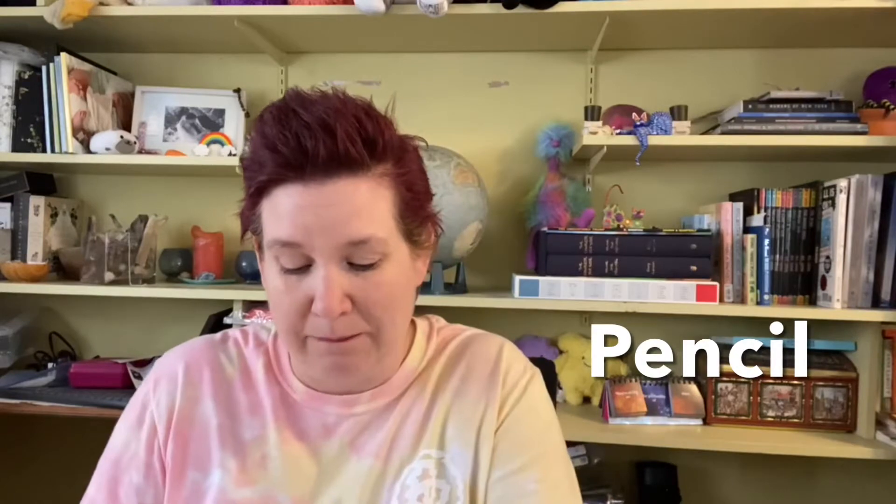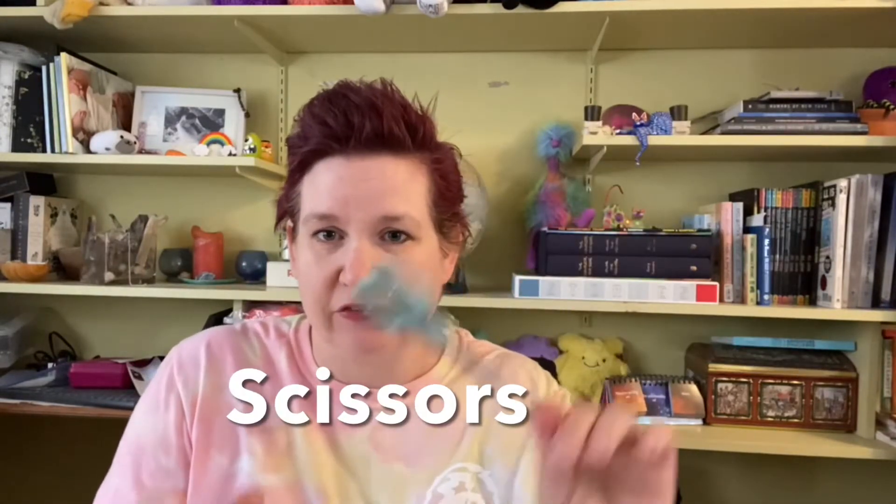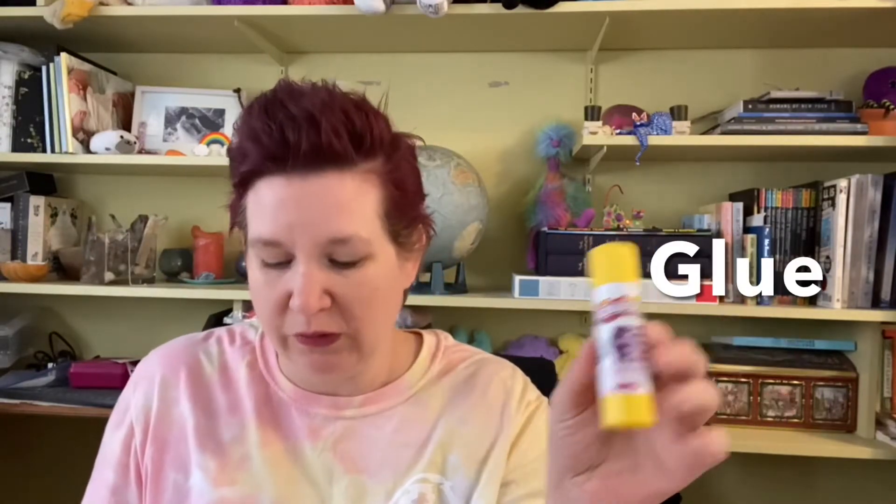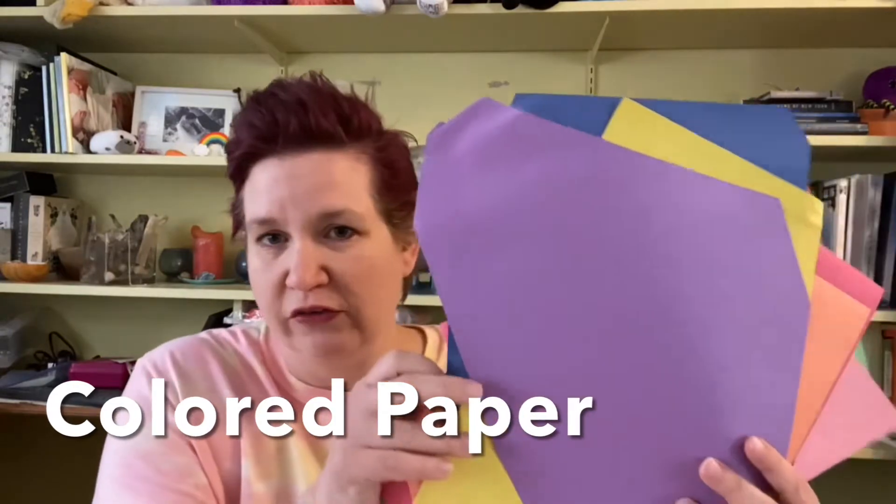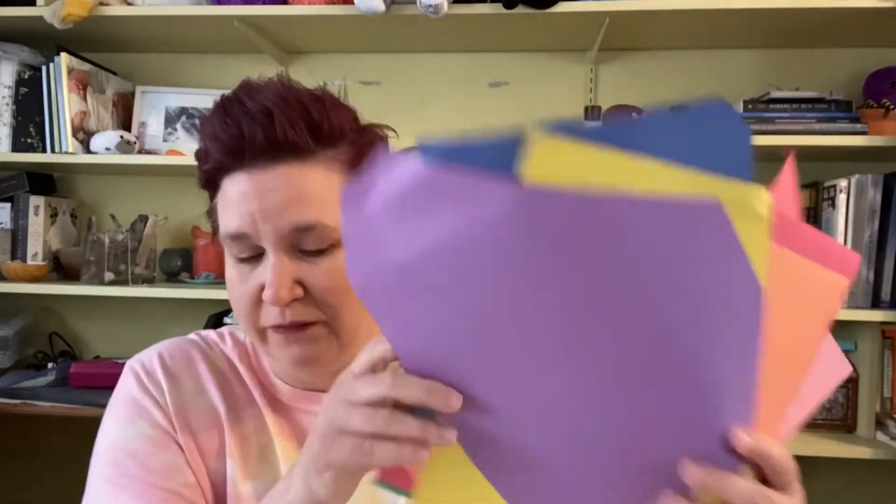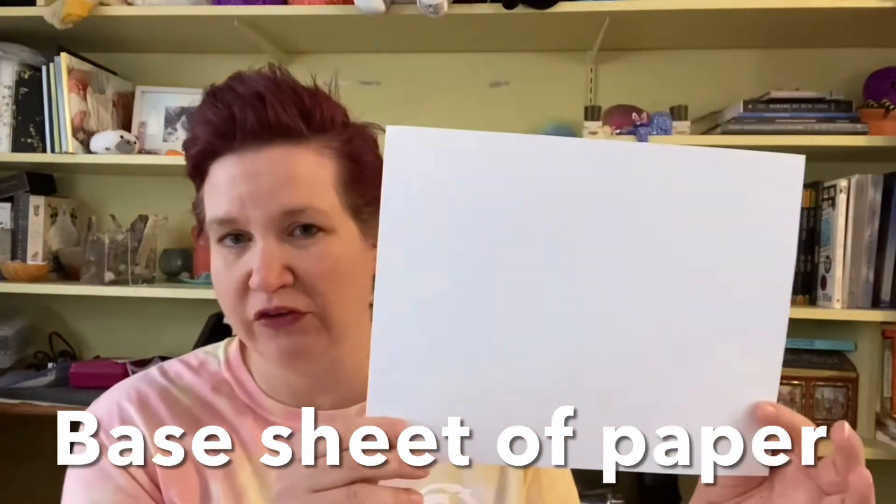In order to do this project, you will need a pencil, you will need a pair of scissors, you will need glue, you'll need some colored paper that we're going to use to draw the circles on and then cut them out, and then you will need a piece of paper to glue it all onto, and I have this piece of white card stock. You can use whatever color, whatever kind of paper you like for any of this.